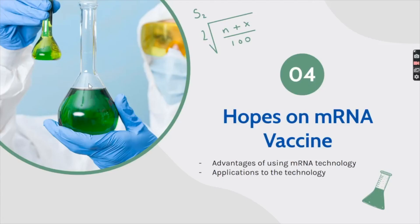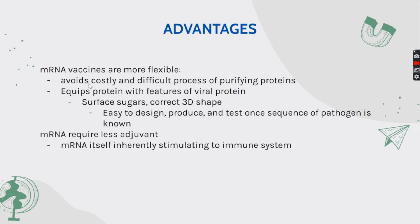Though there are numerous limitations to mRNA vaccines, scientists continue exploiting mRNA technology to advance the healthcare field. mRNA vaccines are more flexible — by enabling cells to regenerate antigens, it avoids the costly and difficult purification of proteins and equips the proteins with typical features that viral proteins have, like surface sugars and the correct 3D shape. The flexibility of this platform stems from the ease of working with genomic sequences. Once the sequence of the pathogen is known, the vaccines are easy to design, produce, and test. Some have also suggested that mRNA vaccines may require less adjuvant, since the mRNA itself is inherently stimulating to the immune system. An adjuvant is a bolstering second molecule that signals danger to the immune system.